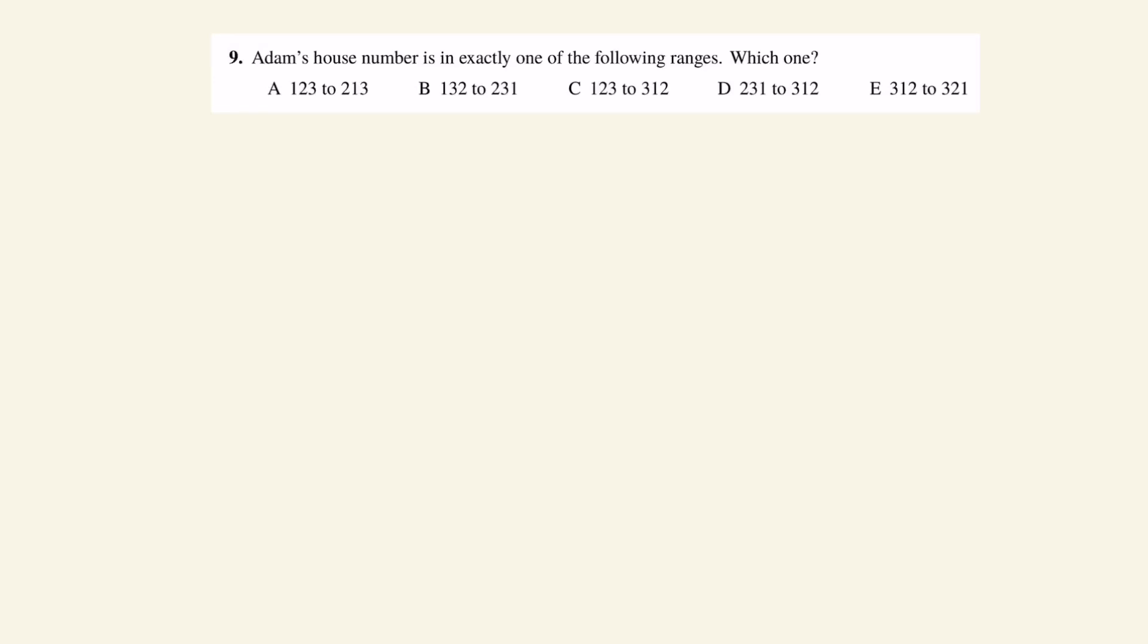Adam's house number isn't exactly one of the following ranges. The way we can realize how to solve this is that there's only one possible house number and we are running from 123 to 321.